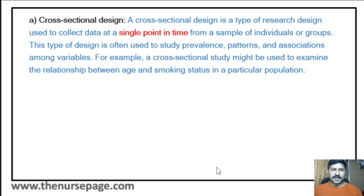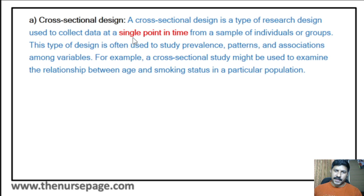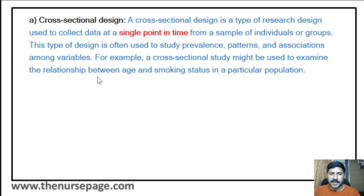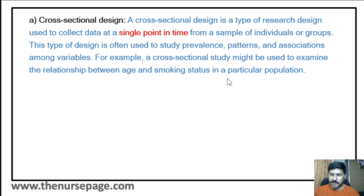Cross-sectional design is a type of research design used to collect data at a single point in time — that particular time, what is happening is what cross-sectional design studies. Longitudinal study means the researcher observes details over a long period. Cross-sectional design is often used to study prevalence, patterns, and associations among variables. For example, it might examine the relationship between age and smoking status in a particular population.